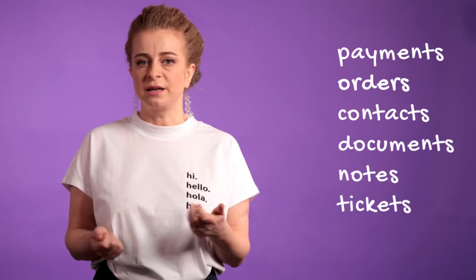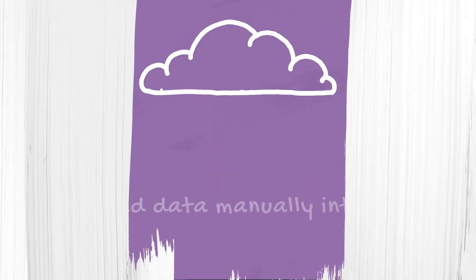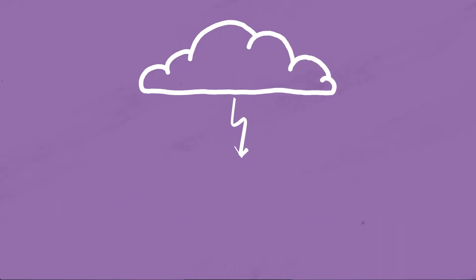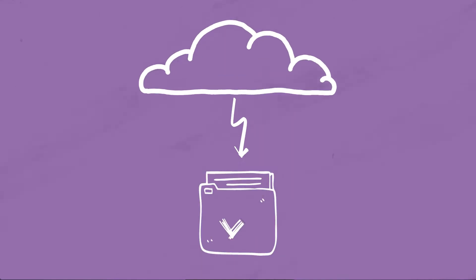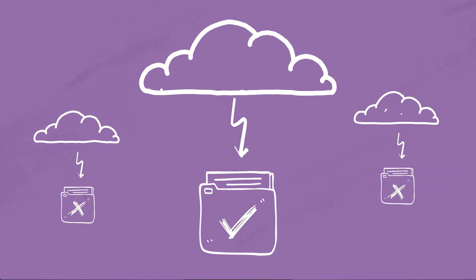Once you've decided what to backup, the next question is where to start? Of course you can try to do backups manually, meaning that you download data from your apps into files. It provides a level of protection and it's much better than doing nothing at all. The problem is you can easily miss something important, and it might be that you just can't export some data from your app. This often happens with sales notes or emails from a CRM.